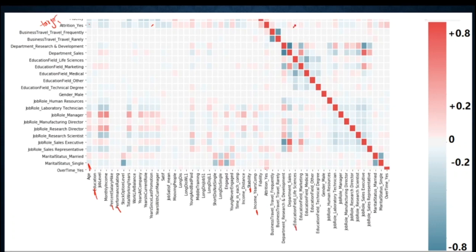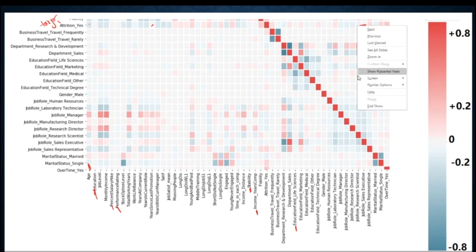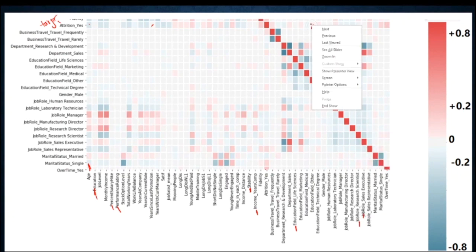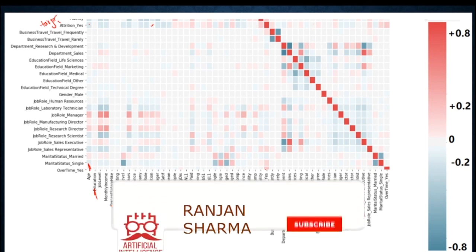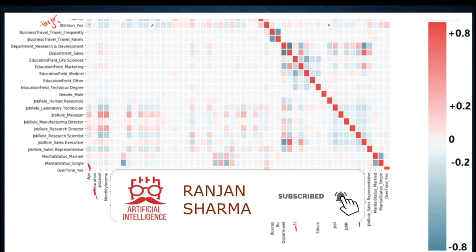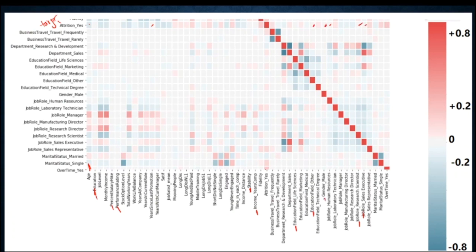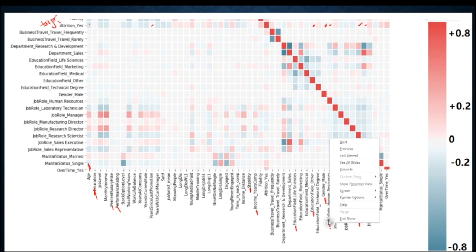Education field Life Sciences has no correlation, so we delete it. Job role Research Scientist and job role Sales Executive, and education field Other are also white — we delete those. Education field Human Resources is also white — deleted. Gender Male shows no correlation with whether an employee left, and job role Human Resources is also not correlated.